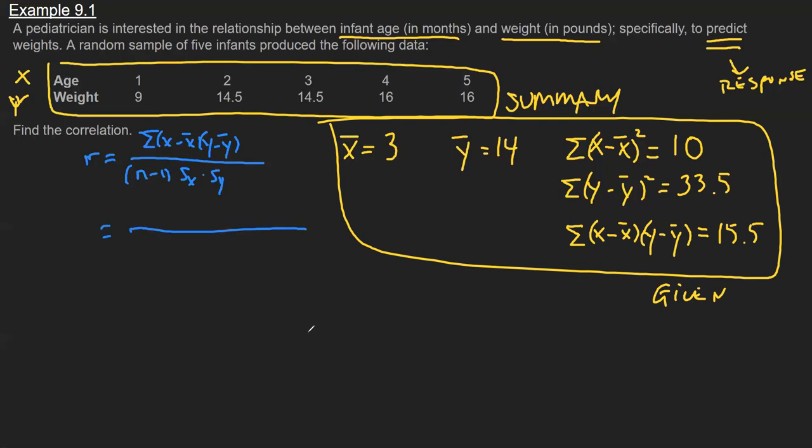So n, as always, is our sample size. So we have five infants. This numerator term, the cross product that we have, is 15 and a half.